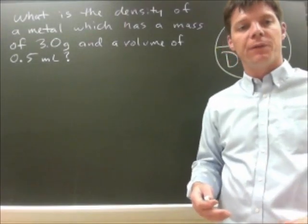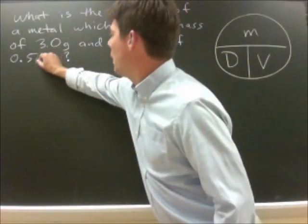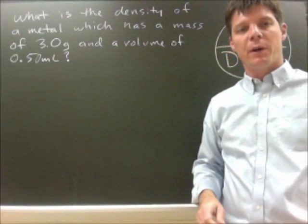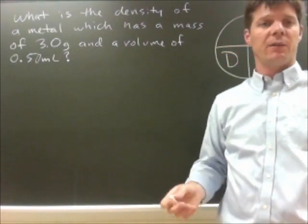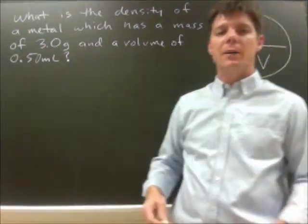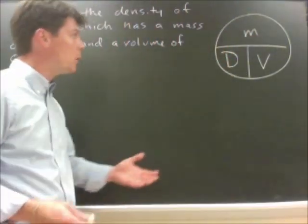I'm going to go ahead and just change that to 0.50 just so we're going to keep two sig figs all through this question. So in order to solve this question we want to use our relationships for density.